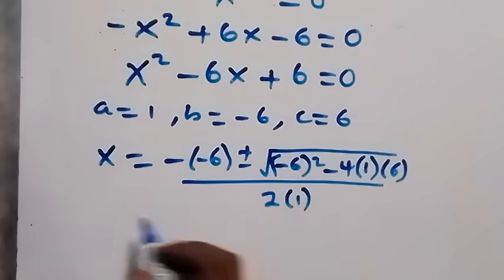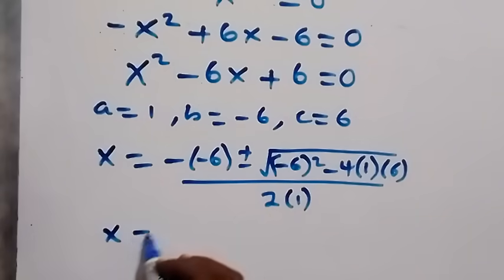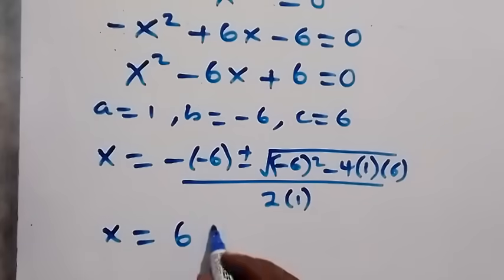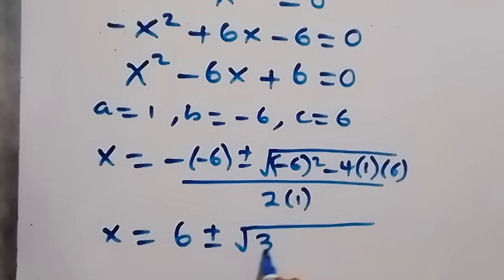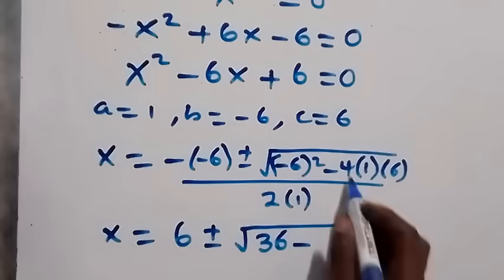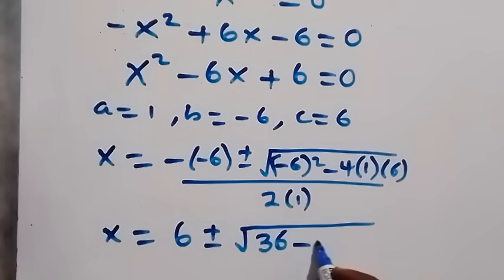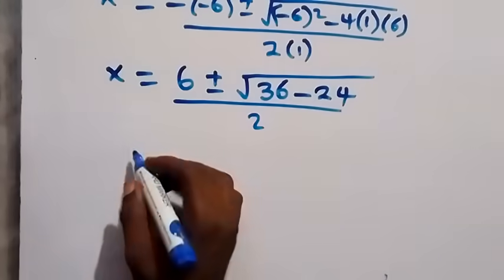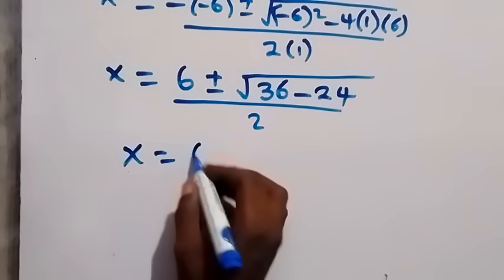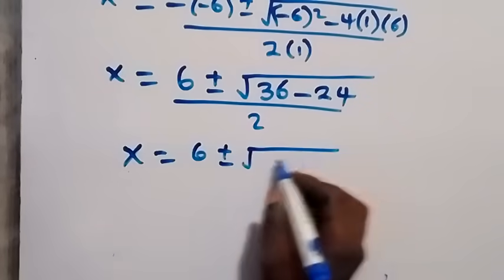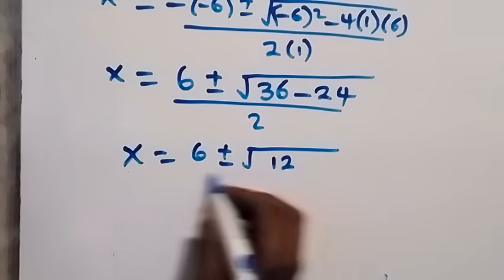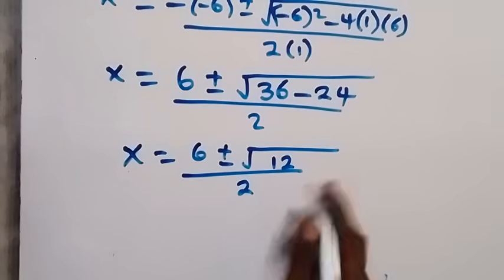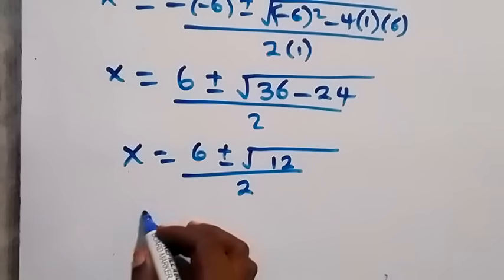That gives us x equals six plus or minus the square root of negative six squared, which is 36, minus four times six, which is 24, all over two. So we have x equals six plus or minus the square root of 12, over two.